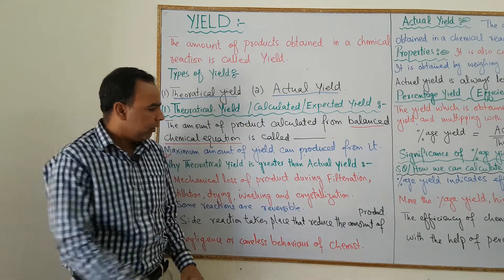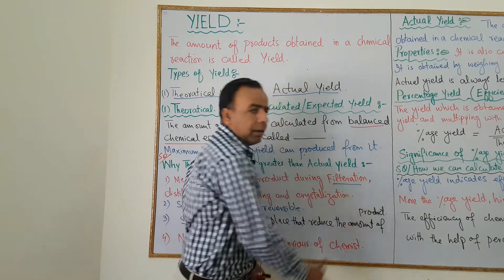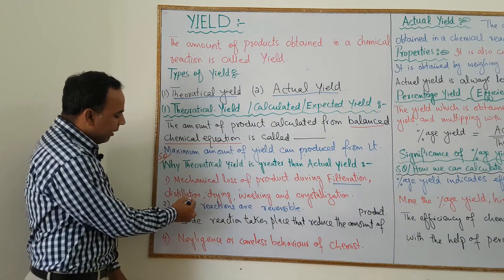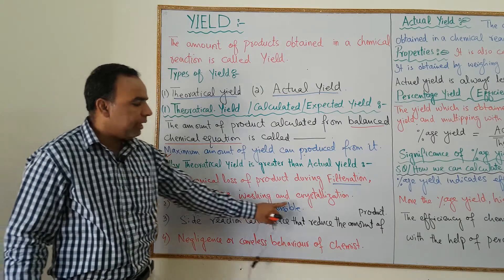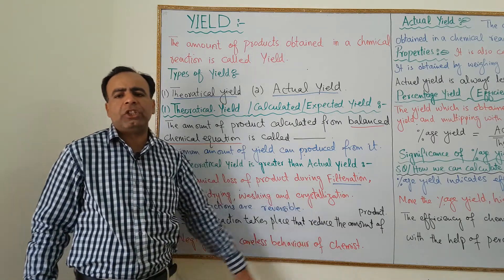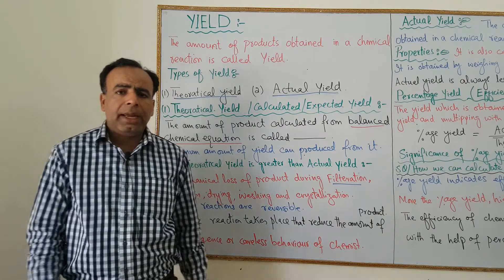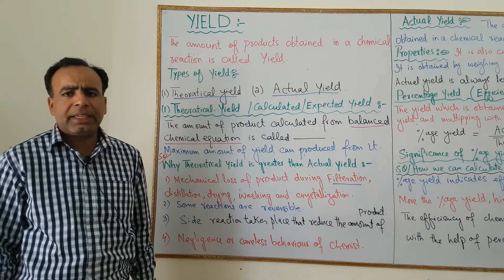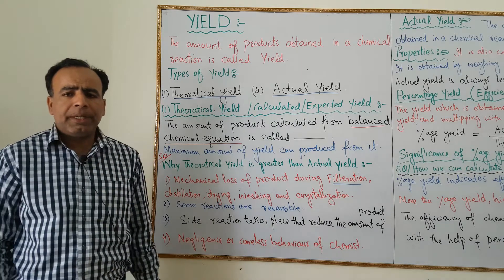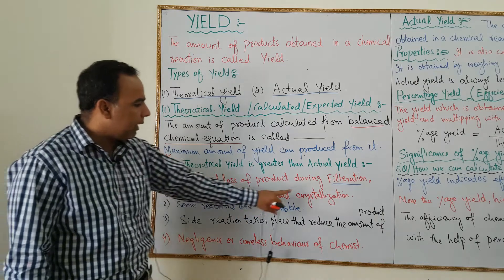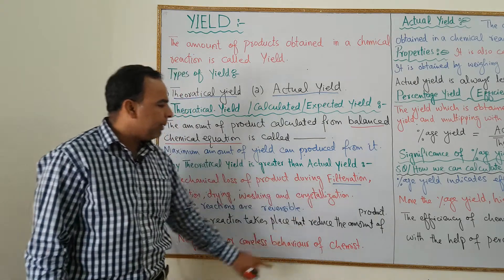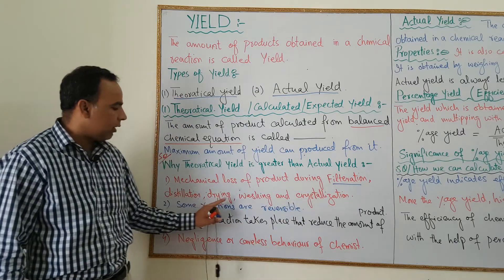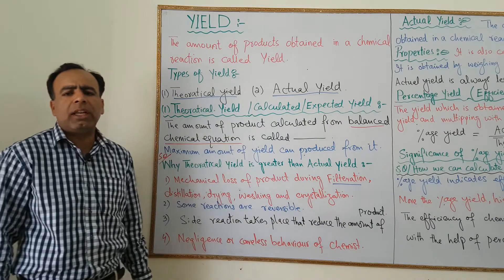Mechanical loss occurs during filtration, separation by distillation, drying, washing, and crystallization. When we actually perform the reaction, falling losses will occur with the help of these techniques: filtration, distillation, drying, washing, and crystallization.